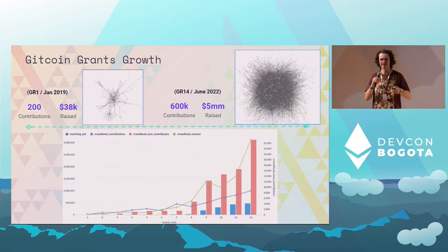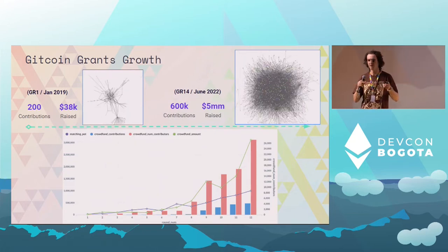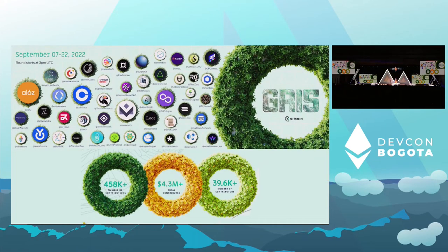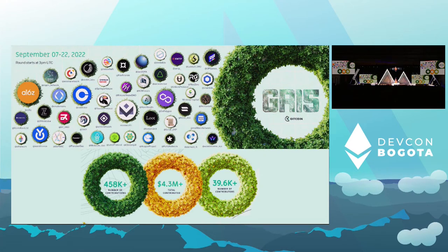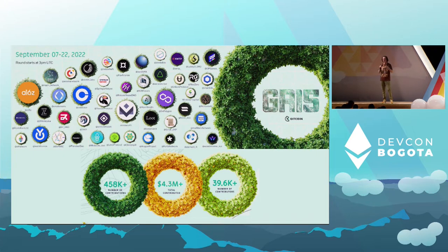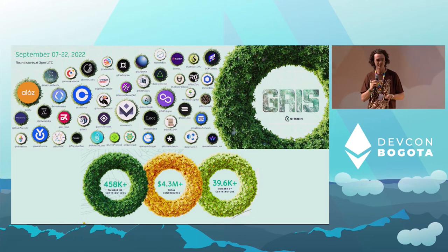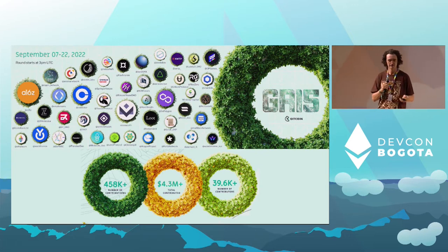These visualization graphs show the 3D network of all donations and connections between users and projects. The most recent round, Grants Round 15, just ran in September. This wouldn't be possible without the matching pool funders — DAOs, organizations, private companies, and individuals that donate large amounts to the matching pool to incentivize the community to also donate to public goods. That last round had over 450,000 contributions, over $4 million raised, and almost 40,000 unique donors.